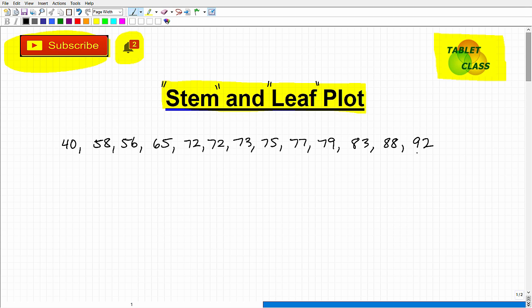Then somebody really did well, got a 92, and everything else in between. So we want to analyze this information. But if I just list the numbers down like so, I'm scanning through them. It doesn't really give me maybe the best sense of the way the data is being distributed.